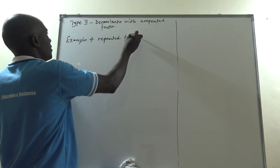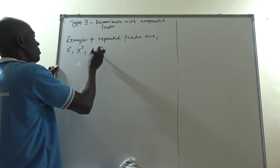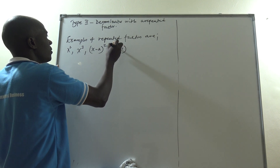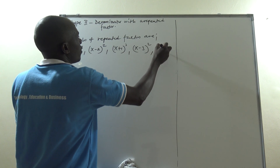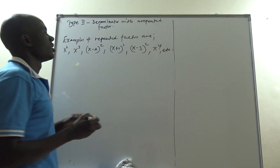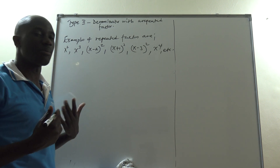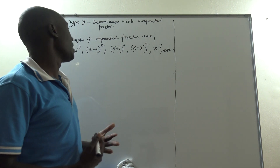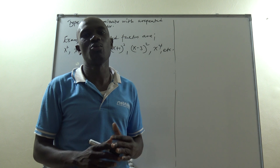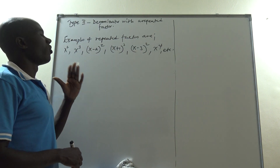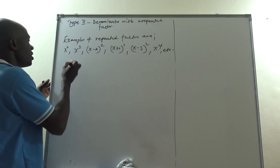Examples of repeated factors include x squared, x cubed, (x minus 2) squared, (x plus 1) cubed, (x minus 3) squared, x to the power 4, and many others. You can see that all these involve repeating factors — x squared means x appears 2 times, x cubed means x appears 3 times. All those scenarios we term as repeated factors, and in this type of partial fraction we will look at denominators having such cases.